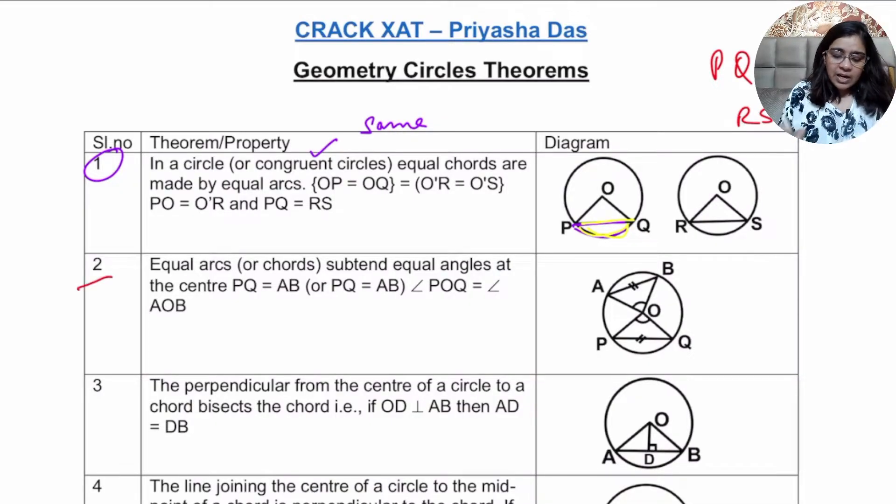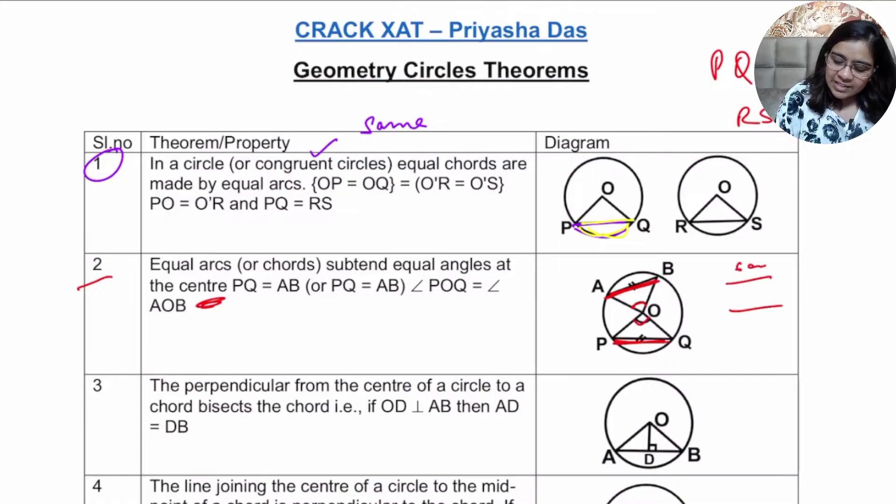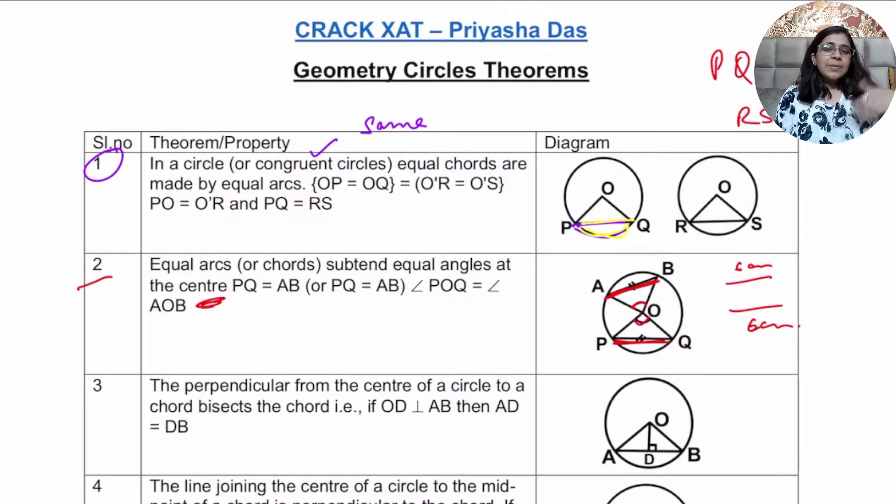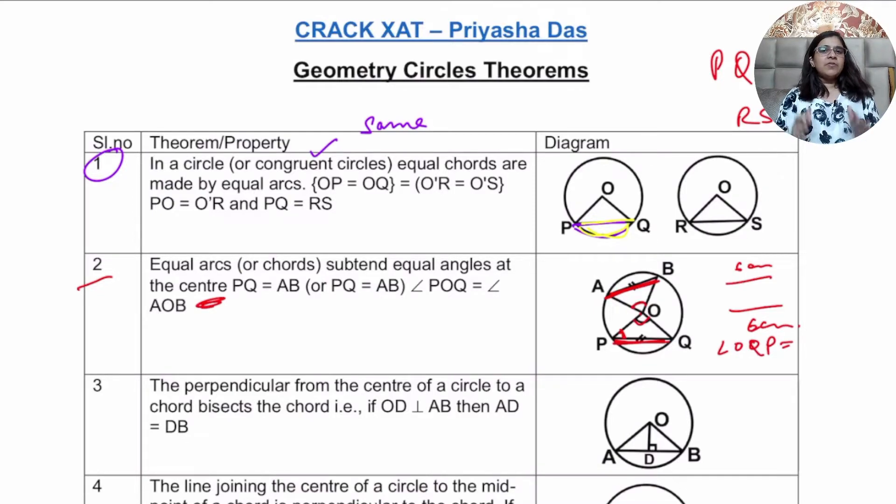Second one is the equal arcs are subtending the same angles at the center. This is important that if both chord lengths are same, then both the angles they make at the center are also same. Now how will this come in the question paper? So in the question paper they might give you two chords whose length is same, like 6 centimeter and 6 centimeter, and one of the chord is making an angle of 80 degree at the center. So the other one will also make 80 degree. So with this help, maybe this angle is given in the question and someone asks you OQP. So you will be able to find that out with the help of the formula that angles of a triangle sum up to 180 degree.